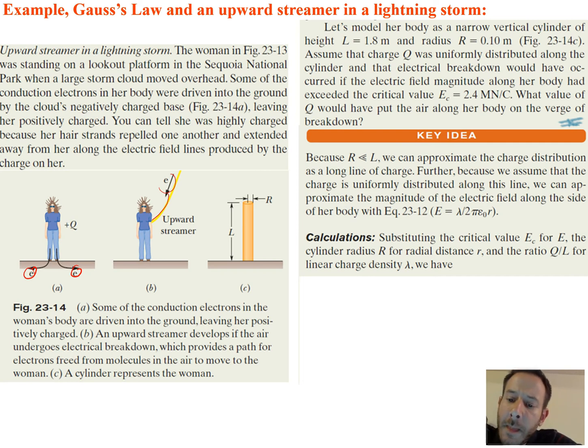So continuing on, let's model her body as a narrow vertical cylinder of length L, which is 1.8 meters, which is her height, and a radius of 0.1 meters. Assume that charge Q was uniformly distributed along the cylinder and that the electrical breakdown would have occurred if the electric field magnitude along her body had exceeded the critical value. So our critical value in this case is 2.4 mega newtons divided by coulombs. What value of Q would have put the air along her body on the verge of breakdown?